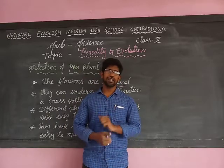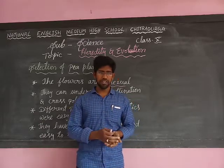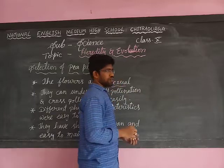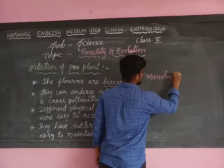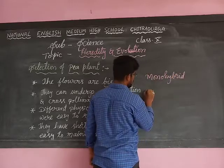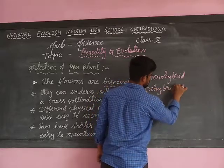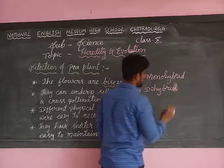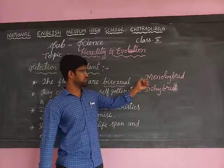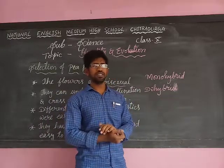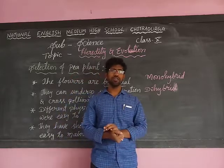After selecting the pea plant, Mendel underwent several different types of experiments. In these experiments, we have to study the main two experiments: the first is called monohybrid and the second is dihybrid. These are the two main experiments you have to study in your syllabus. The results of how they take place — everything you will study in your next class. Hope you understood; we will continue in the next class. Thank you all.